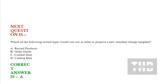Which of the following record types would you use in order to propose a new standard change template? Option A: Record producer. Option B: Order guide. Option C: Content item. Option D: Catalog item.